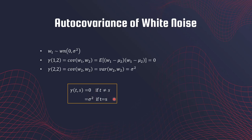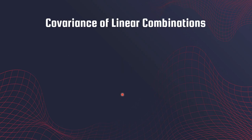This says that for white noise, covariance is zero for distinct time points and σ² when the time points are equal. Take note of the way in which I have written down this auto covariance function — we are going to use this compact notation a lot in this course.